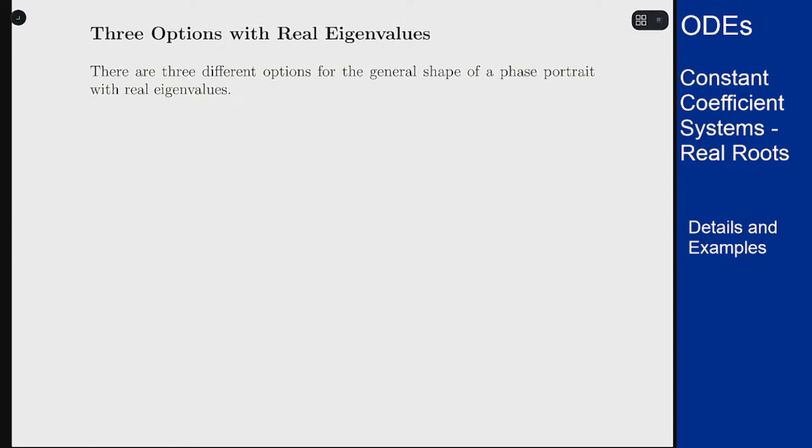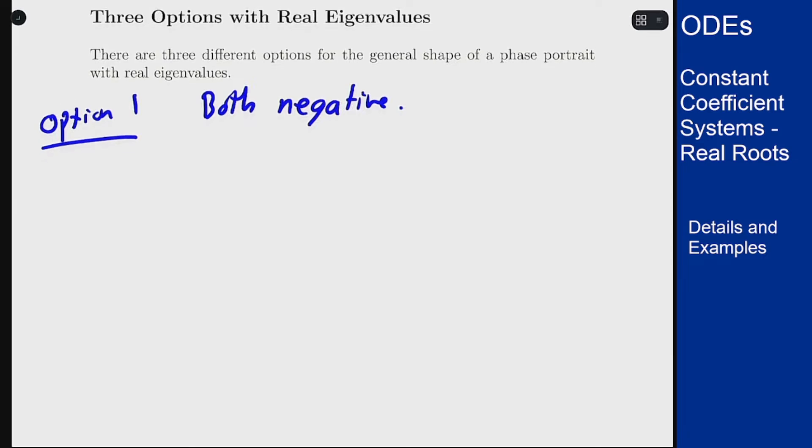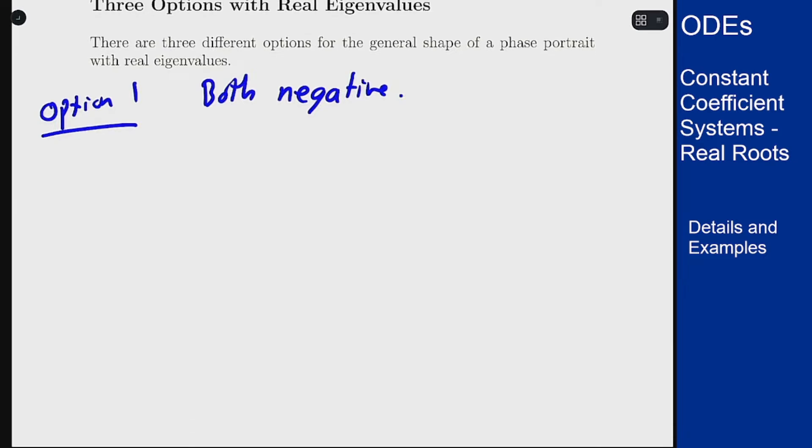Option one is the one we saw previously, when both eigenvalues are negative. So in that case we'll say we have r1 is less than r2 is less than zero, so r1 is more negative than r2.